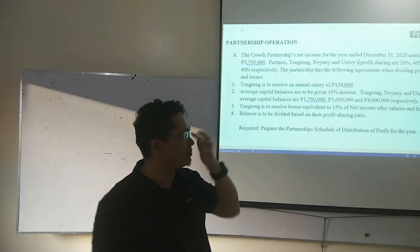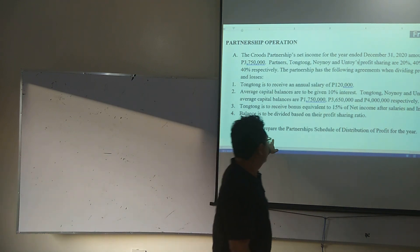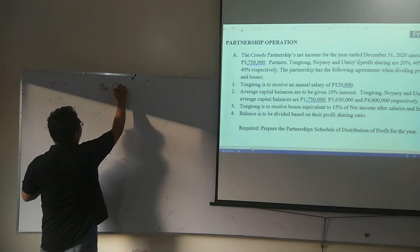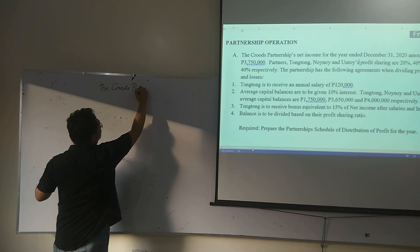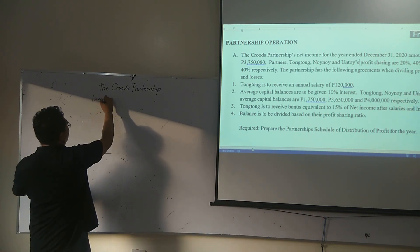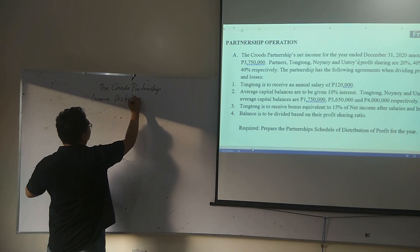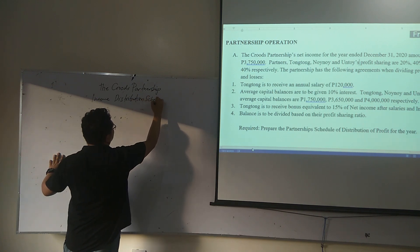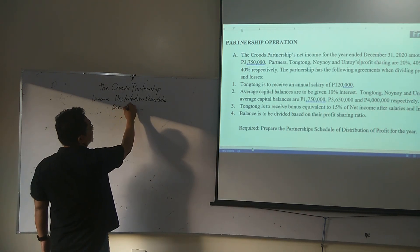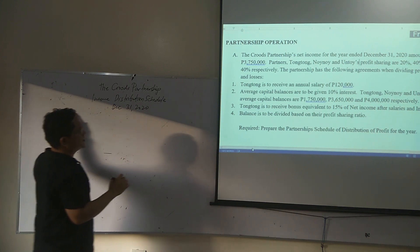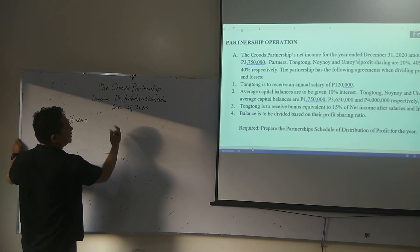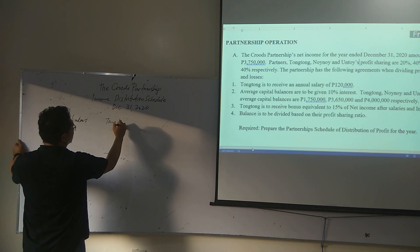The best way to answer the distribution of partnership income is to have your schedule ready. We have the Fruits Partnership Income Distribution Schedule for December 31, 2020. We have Particulars or Description as the first column, then we have partner Tongtong.